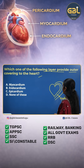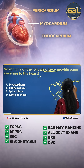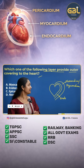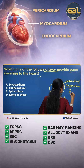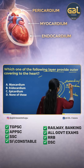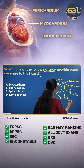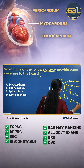Mesocardium is also called myocardium. Why is it called myocardium? Because it is rich in muscles. Next, the outer covering of the heart is called epicardium, which is the outer protective layer.